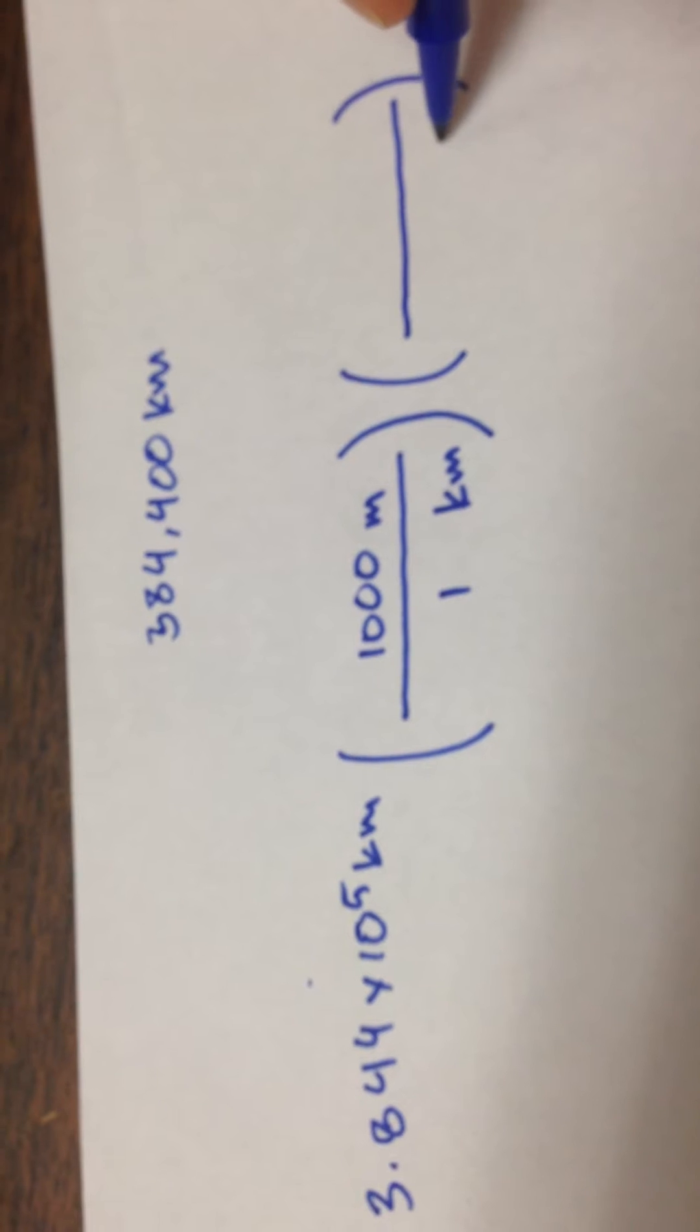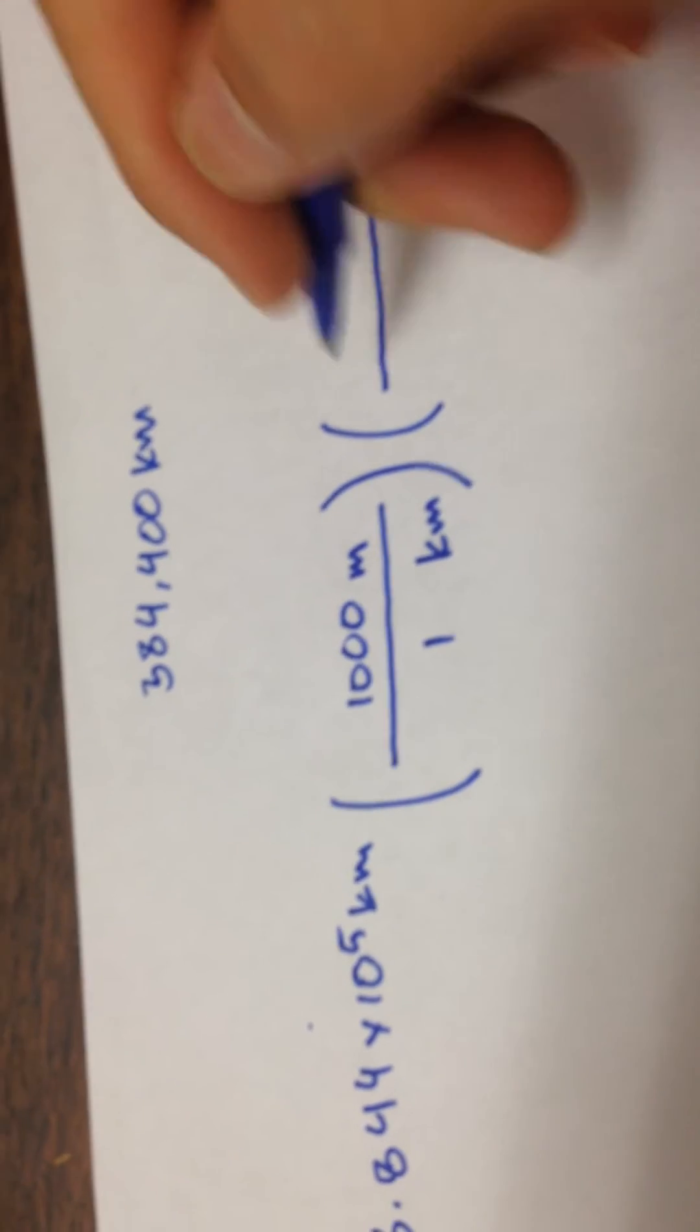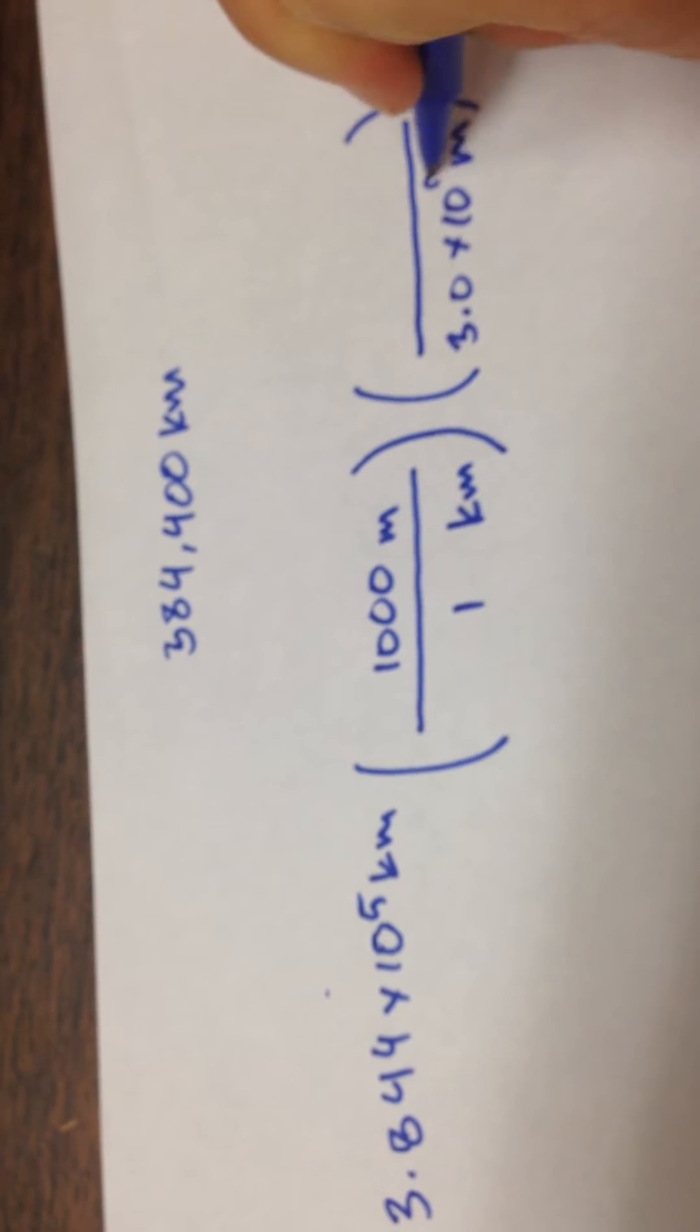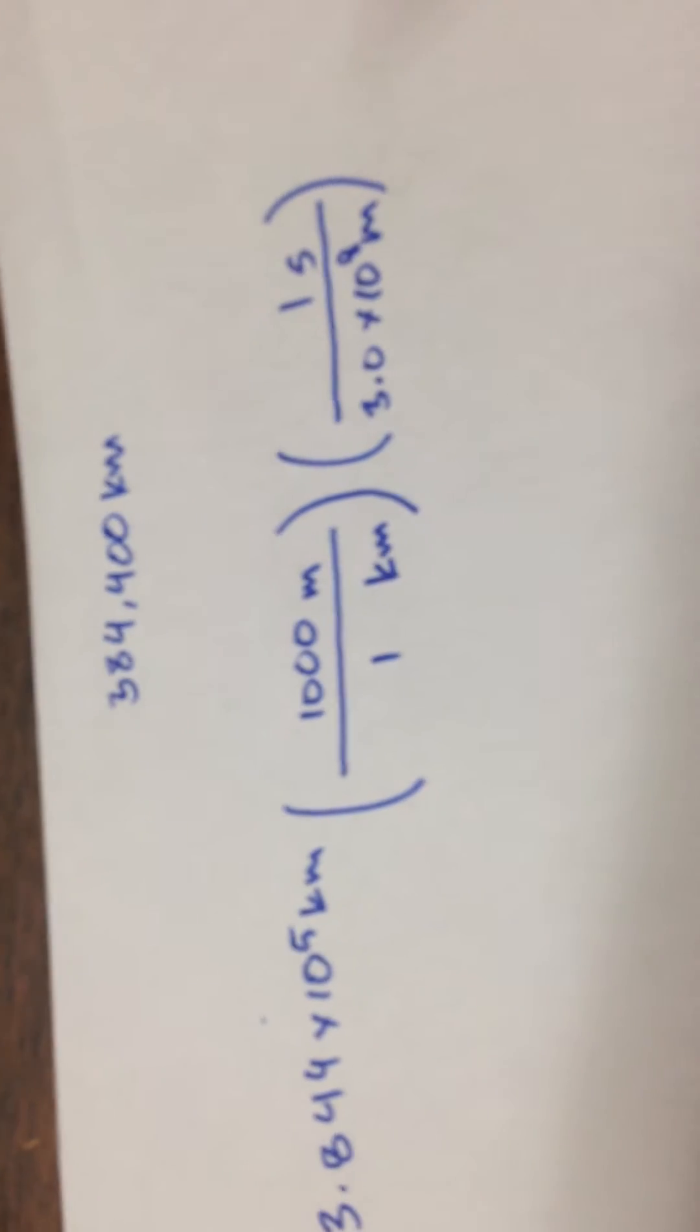Now, I know the speed of light here, and I want my meters on the bottom. So there is an equivalence with the speed of light that 3.0 times 10 to the eighth meters per second is the speed at which light can travel.